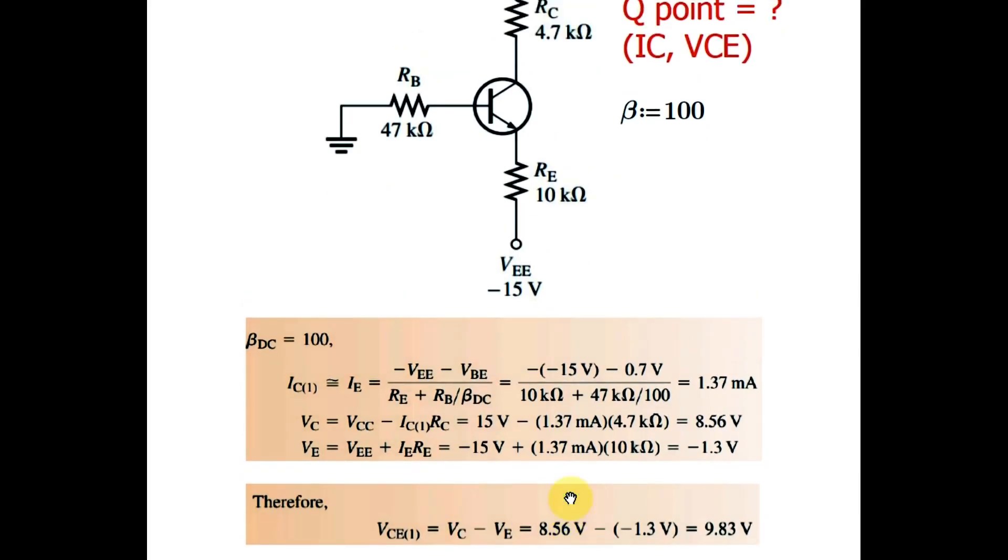Let us finally find the value of VCE which is given by VC minus VE. So 8.56 minus minus 1.3 volt, you have 9.83 volt which is dropping across your collector to emitter. So your VCE is given by 9.83 volt.